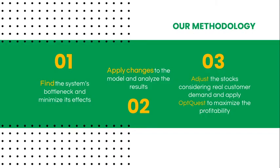We've used a three-step methodology to improve the efficiency of the restaurant. First, we find the system bottleneck and come up with ideas to minimize its effects. Second, we change the model accordingly and analyze the results. Third, if the results are promising, we adjust the stocks using real customer demand. We then run our model with OptQuest to minimize the customers who are forced to change their order and find the best overall solution.